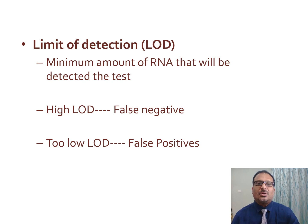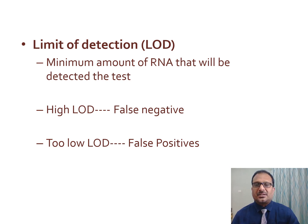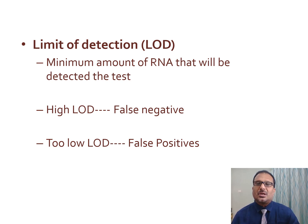Some kits have a high limit of detection, meaning they can only detect when the viral load is high — if the viral load is low, they may give false negative results. Conversely, some kits have a very low limit of detection, meaning even a few virus copies present in the sample may give a positive result, even if those viruses do not have multiplying capacity and cannot produce disease. In that case, even though the patient is not truly infected, the test becomes positive — this is a false positive result.